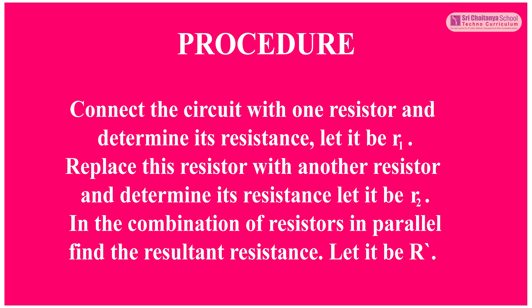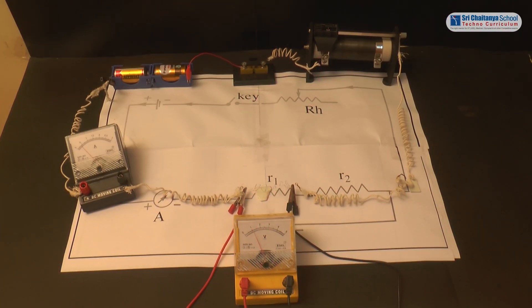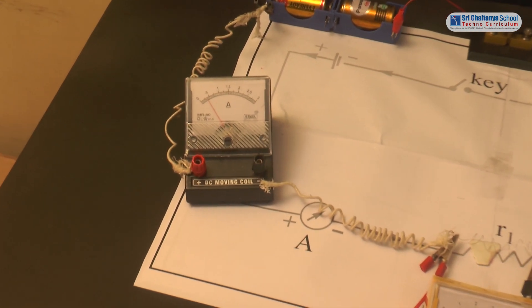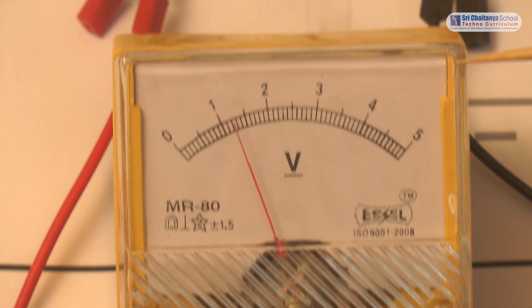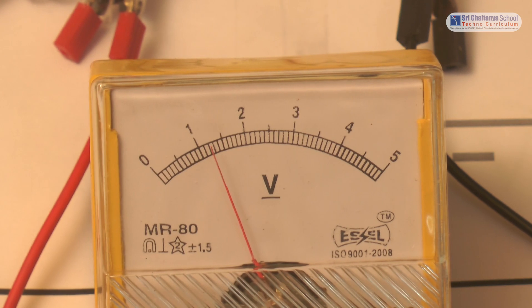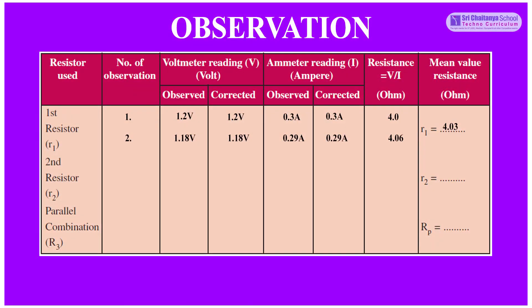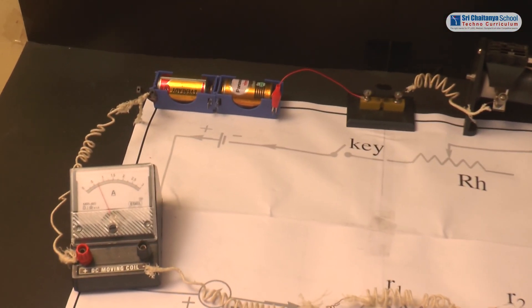Let us see the observations. When the first resistor is connected: in trial 1, the ammeter reading is 0.3 Ampere and voltmeter reading is 1.2 Volts, so the corresponding resistance is 4.0 Ohm. In trial 2, the ammeter reading is 0.29 Ampere and voltmeter reading is 1.18 Volts, so the corresponding resistance is 4.06 Ohm. Therefore, the mean resistance of the first resistor is 4.03 Ohm.